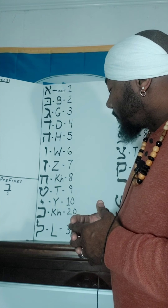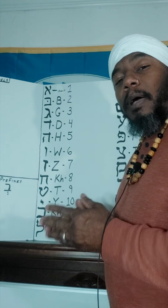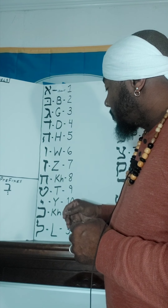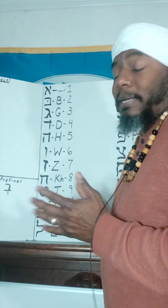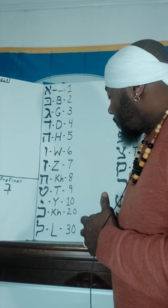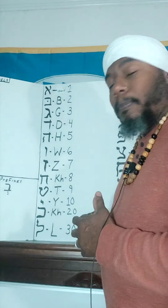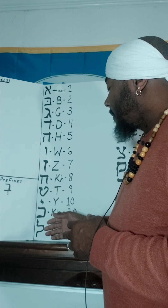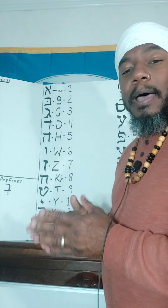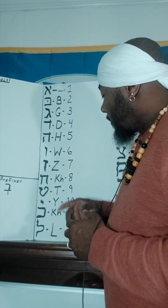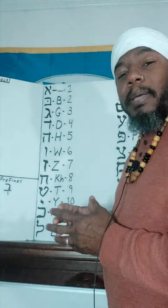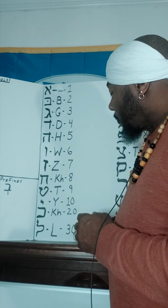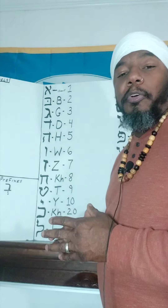The next letter is Koth. That is the KH — some say CH. And the numeral equivalent to that is twenty. The last letter on this side is Lamed. The English equivalent to Lamed is the letter L. And the numeral equivalent is thirty.